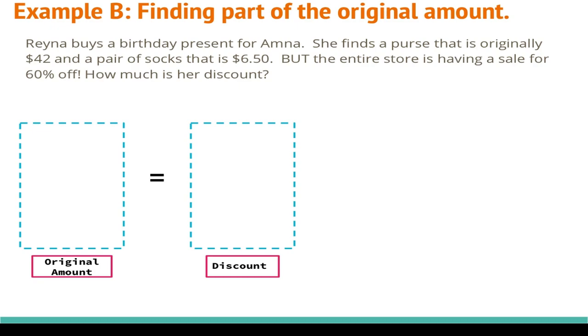Here we are at example B and it says Raina buys a birthday present for Omna. She finds a purse that is originally $42 and a pair of socks that is $6.50, but the entire store is having a sale for 60% off. We need to first find the original amount, and we know that that's going to be 100% of our total price. We know the problem told us that we have a 60% off for a discount, so that's going to be the bottom. Again I've got my percentages on the bottom, so 100% and 60%. So now I need my money, but there's an issue here.